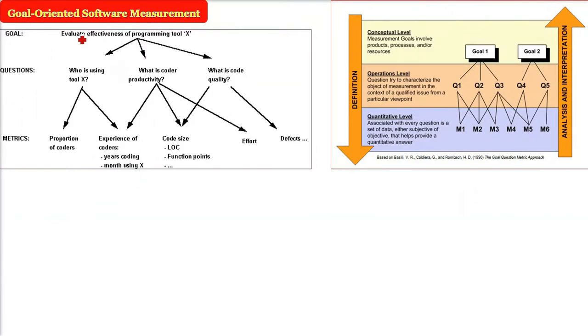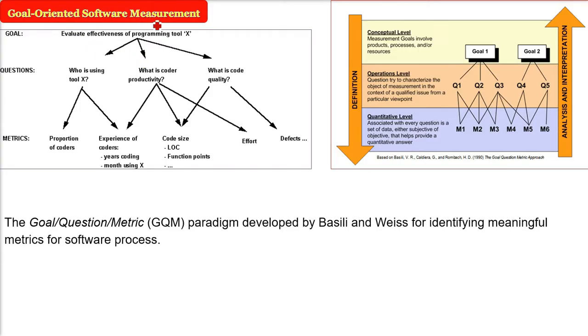Goal-oriented software measurement. The name suggests there needs to be a goal. We are calling it GQM. G is for goal. On the basis of the goal, there will be certain questions. And on the basis of these questions, the answer will tell you the metrics.